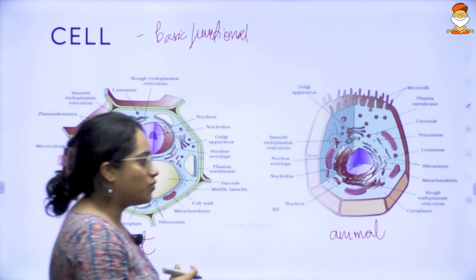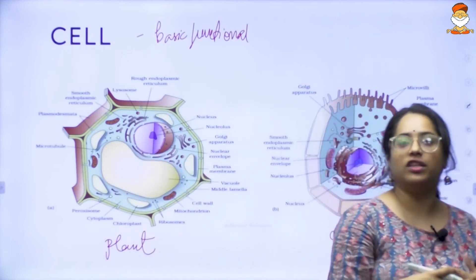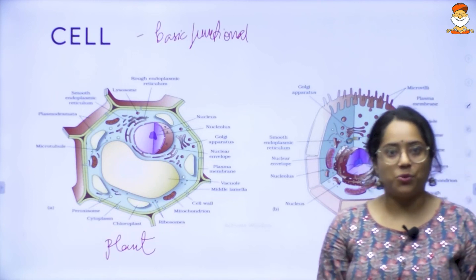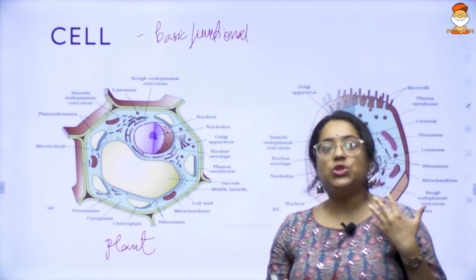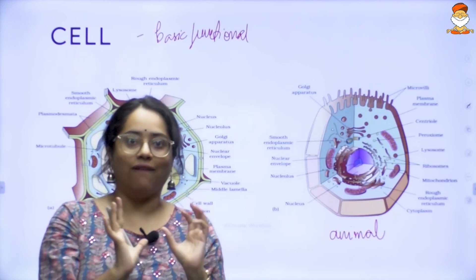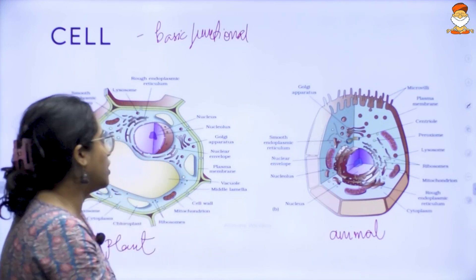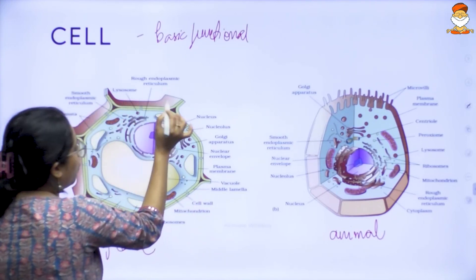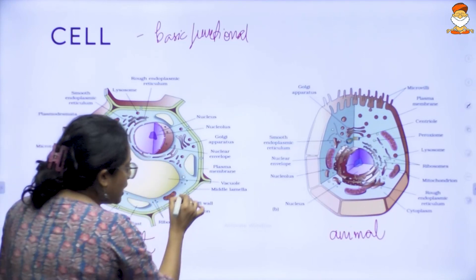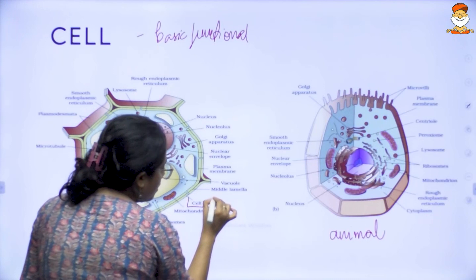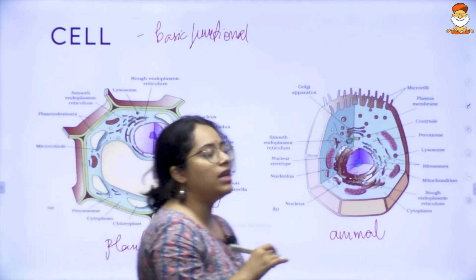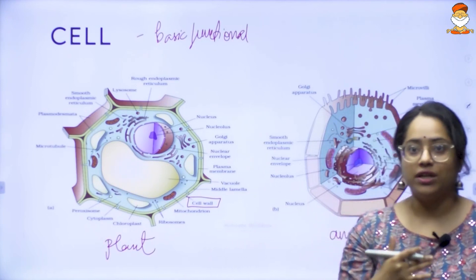One of the first things we notice is what are the differences — they are not the same at all. As you can see, a plant cell seems much more rigid, much more firm in its structure. Why? Because it has something called a cell wall. You can see this thick material here — it's a cell wall.